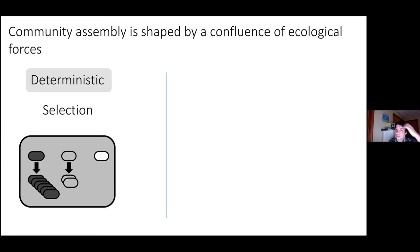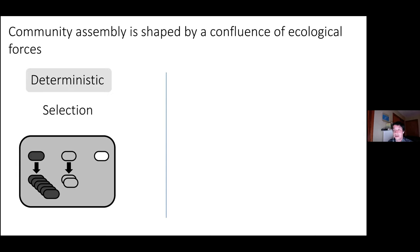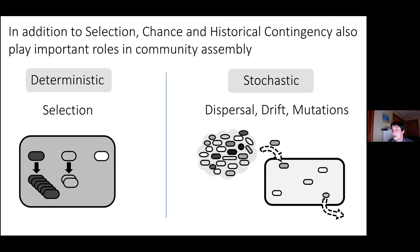To understand this better, it's worth thinking about the forces that shape the assembly of microbial communities in general. Ecological communities are the outcome of both deterministic and stochastic processes. On the deterministic side you have selection — in a given habitat, some taxa will grow better than others and have higher fitness. Two habitats that are very similar will experience similar selective pressures, which can be a force generating convergence in community assembly.